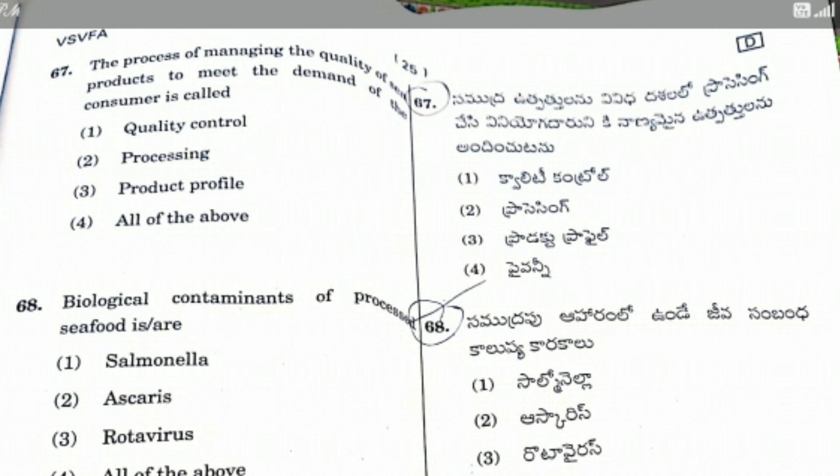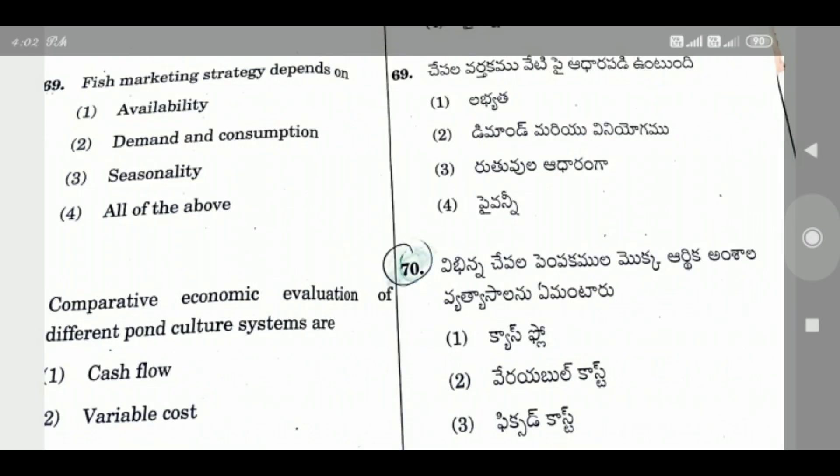Question 68: Biological contaminants of processing seafood are — the right answer is All of the above, that means Salmonella, Ascaris, and Rotavirus.